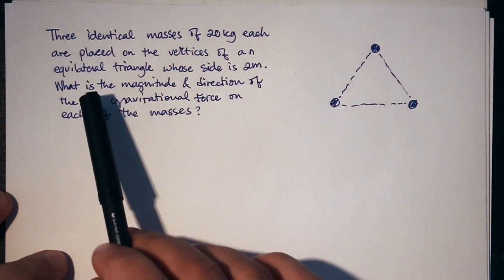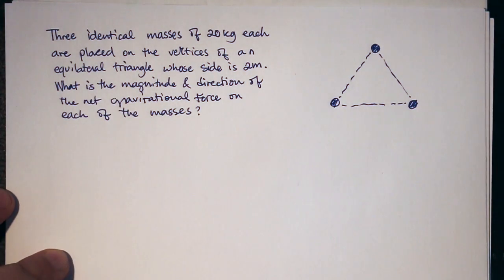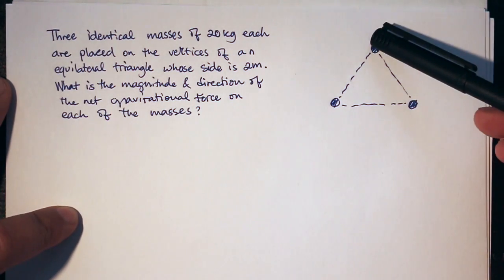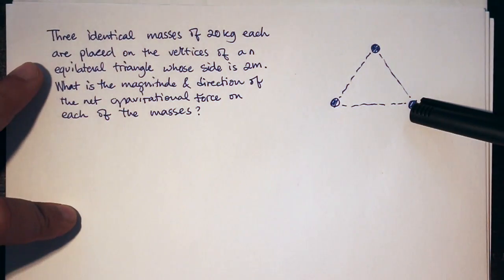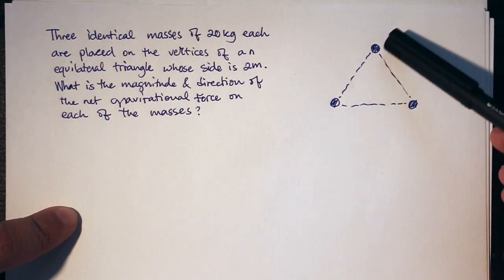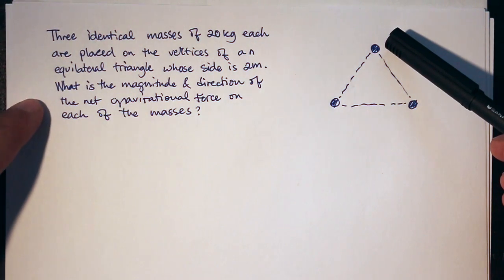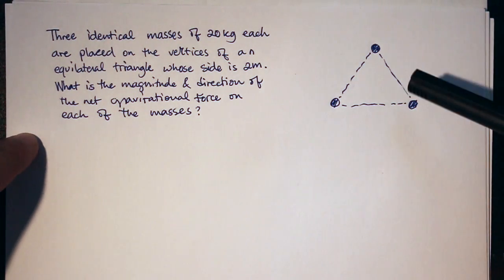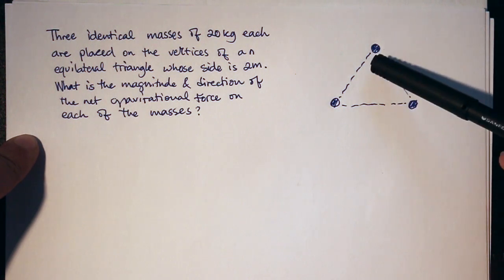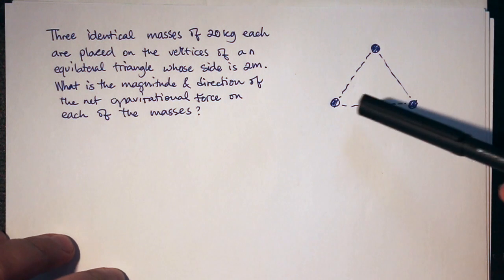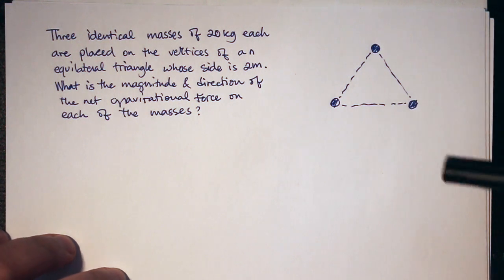Here's a problem about the gravitational force. In this problem, three identical masses of 20 kilograms each are placed on the vertices of an equilateral triangle whose side is 2 meters. The question is, ignoring all the other particles in the universe, what is the magnitude and direction of the net gravitational force on each of the masses due to the other two masses?